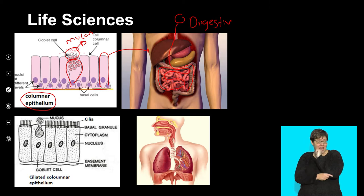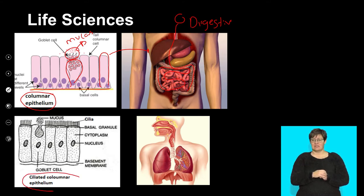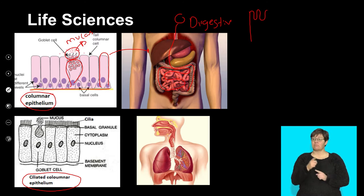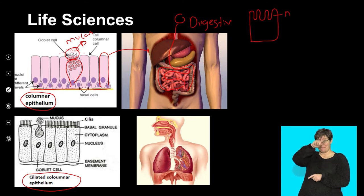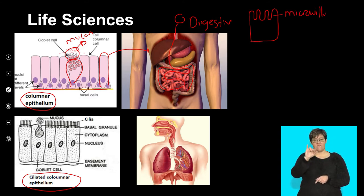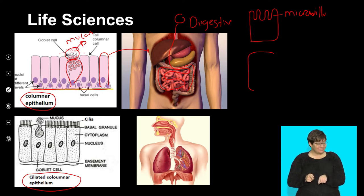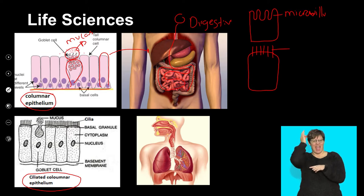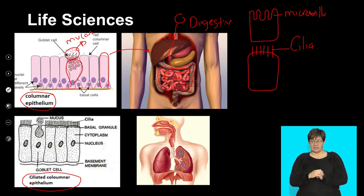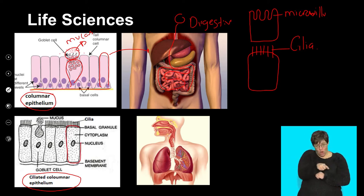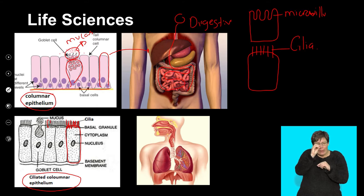The final epithelial tissue we looked at is ciliated epithelium. One thing to understand: if the cytoplasm has finger-like projections, those are called microvilli. Here, however, we have a separate cell with little hair-like structures on top called cilia. So ciliated columnar cells are column-shaped but unlike the ones in our digestive system, they have microscopic little hairs at the top — hence the name ciliated columnar.